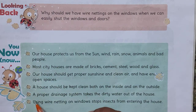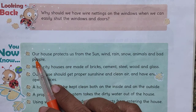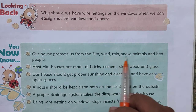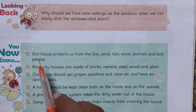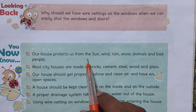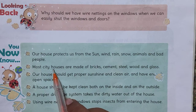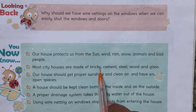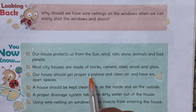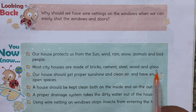Here are the key points from this lesson. Our house protects us from the sun, wind, rain, snow, animals, and bad people — this is one of the most important aspects. Most city houses are made up of bricks, cement, steel, wood, and glass.